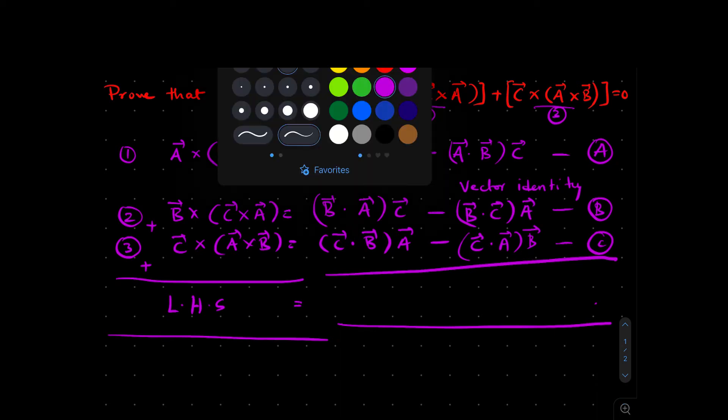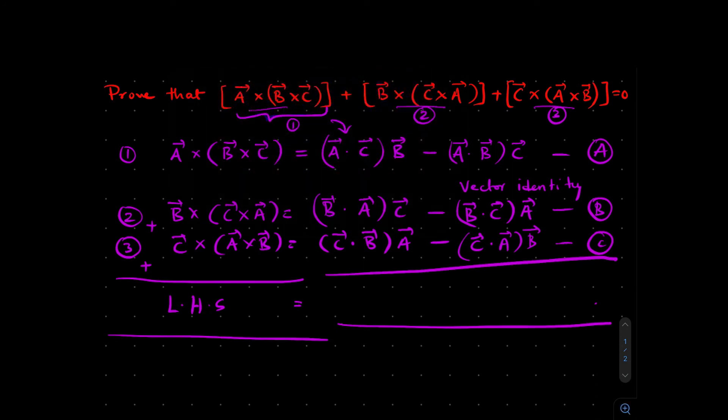So what we see here is the dot product, whether it is A dot C or C dot A, they're the same. So it doesn't really matter. Dot product is not going to change because of the position of the vector. So we can cancel these out. Similarly, B dot A and A dot B, this and this gets cancelled out. And similarly, C dot B and B dot C get cancelled out. So on the right hand side, we have a big zero because pretty much everything cancels out. But on the left hand side, we have the problem statement.